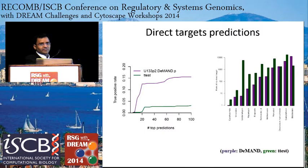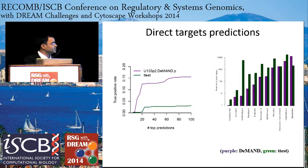The method is designed mainly to identify the mechanism of action. When we compare our method with the t-test — since people usually say the most differentially expressed genes are also involved in the mechanism of action — we see that our method actually performs five times better than the t-test. The t-test achieves only 3% accuracy, whereas DEMAND achieves 15% sensitivity in the top 100 genes.